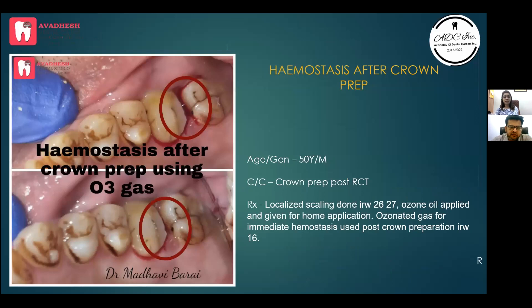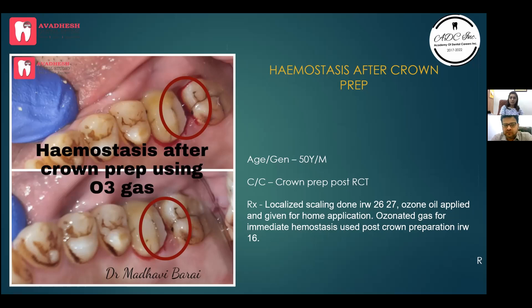Another hemostasis case: male patient, 50 years old. There was a pocket between teeth 6 and 7. The patient refused scaling and only wanted a crown. After crown preparation, ozone gas application was done — circled in the image — and immediate hemostasis was achieved. We placed the cord, took a good impression, and didn't have to wait longer.